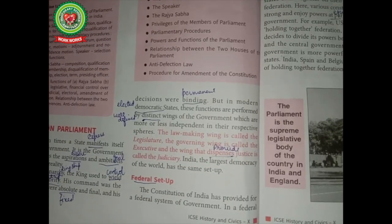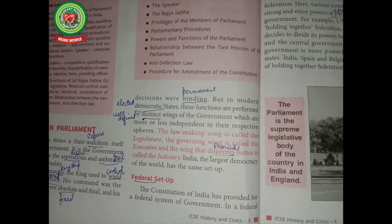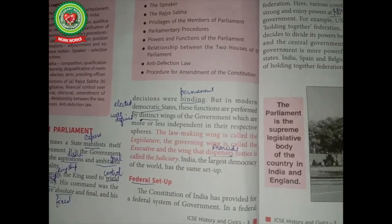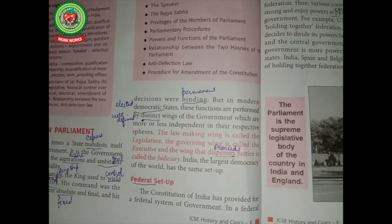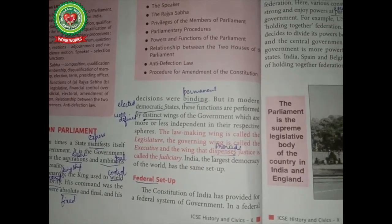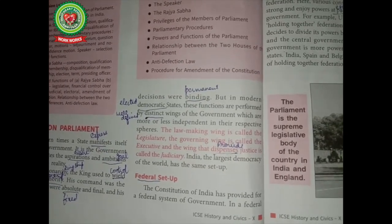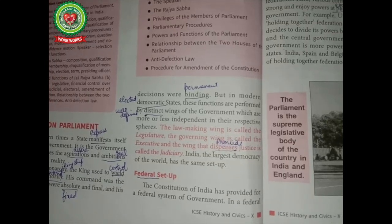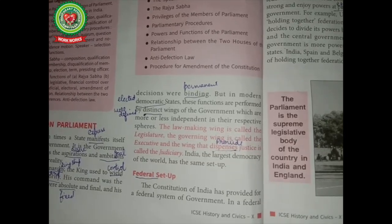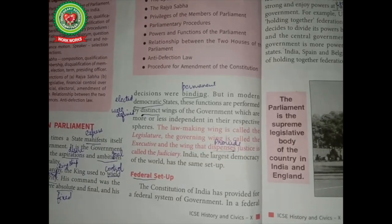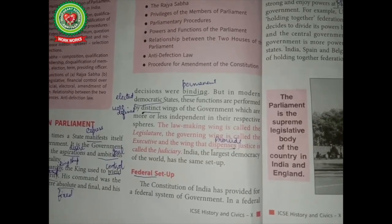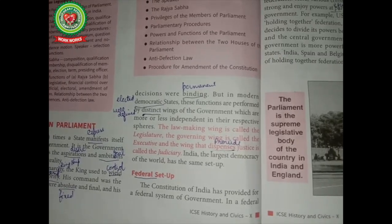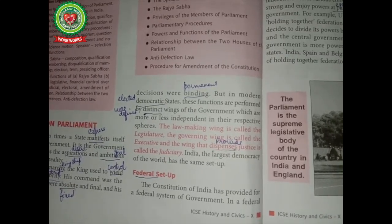The three wings are: number one, the legislature, which is the law-making wing; number two, the executive, which is the governing wing; and number three, the judiciary, whose function is to provide justice. India, as the largest democracy of the world, has the same setup.